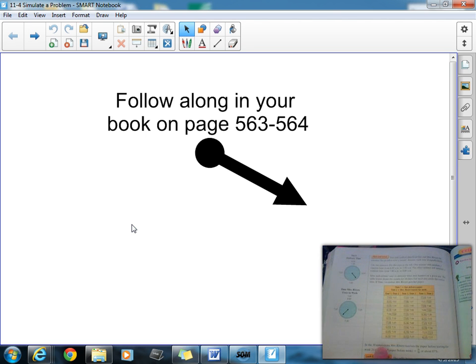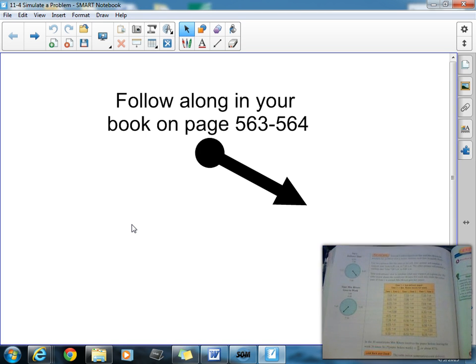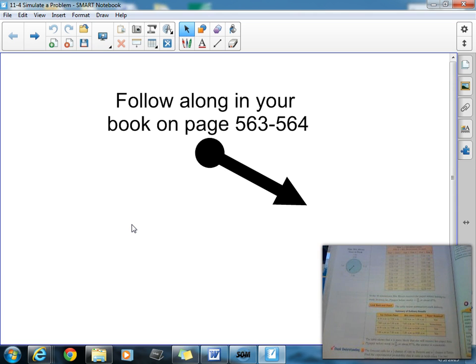Now, we read here, in the 30 simulations, Mrs. Rivers received her paper before leaving for work 26 times. So, P, the probability of getting a paper before work, equals 26 over 30. Remember, that's experimental probability right there, number of times over the total number of trials, and that makes it about 87%.